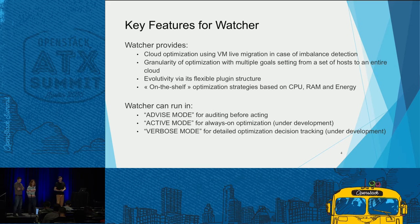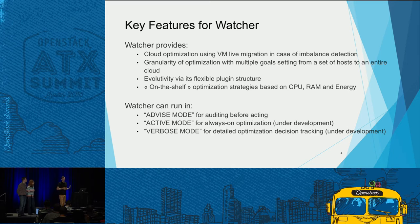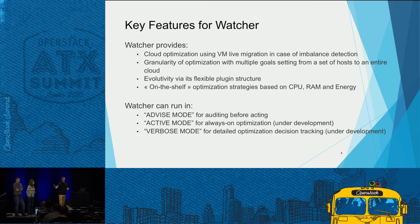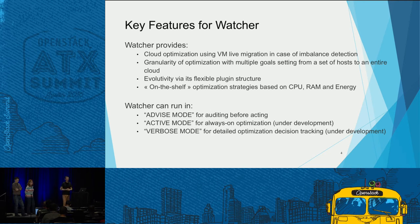Coming back to the key features we provide in Watcher: Watcher provides cloud optimization, for example, using live migration in case of imbalance detection. We look at all the CPU metrics we can get from the telemetry system, then make decisions about migrating one VM from one host to another in case of load balancing. It's a very flexible plugin structure — you can add strategies, actions, and goals in Watcher. Everything is plug and play. We provide on-the-shelf optimization strategies based on CPU, RAM, and energy consumption.